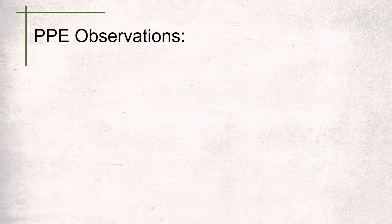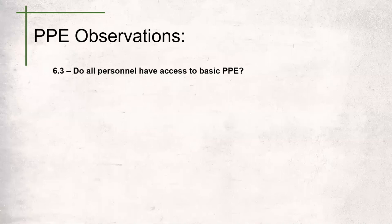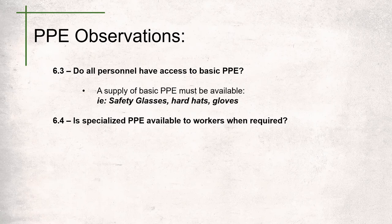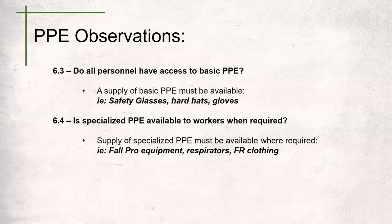PPE also has questions that are solely around observations. During the observational tour, auditors look for specific things. Question 6.3 asks: do all personnel have access to basic PPE? The auditor is looking for a supply of basic PPE — safety glasses, hard hats, and gloves. Question 6.4 asks: is specialized PPE available when required? The auditor will ensure there is a supply of specialized PPE available where needed — fall protection equipment, respirators, fire-rated clothing, and similar items.